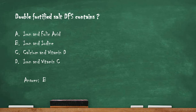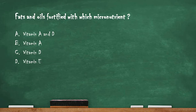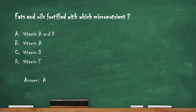Next question: fats and oils are fortified with which micronutrient? Option A: vitamin A and D. Option B: vitamin A. Option C: vitamin D. Option D: vitamin E. The right answer is option A — vitamin A and D. Fats and oils are mainly fortified with vitamin A and vitamin D.